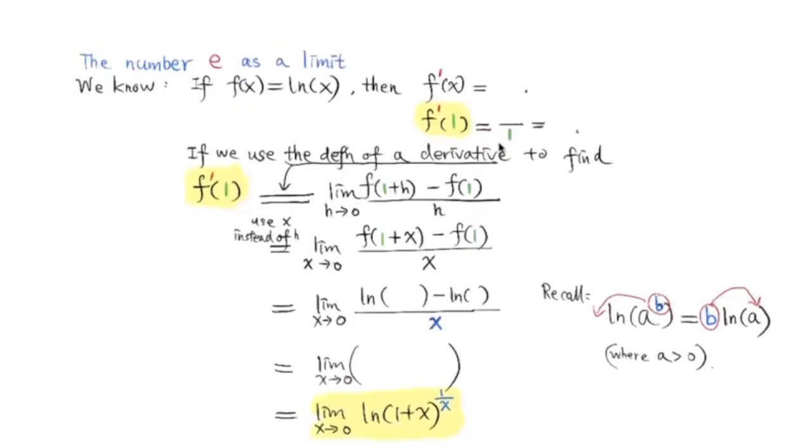The number e as a limit. We know the number e is about 2.718, and today we are going to discover e as a limit.